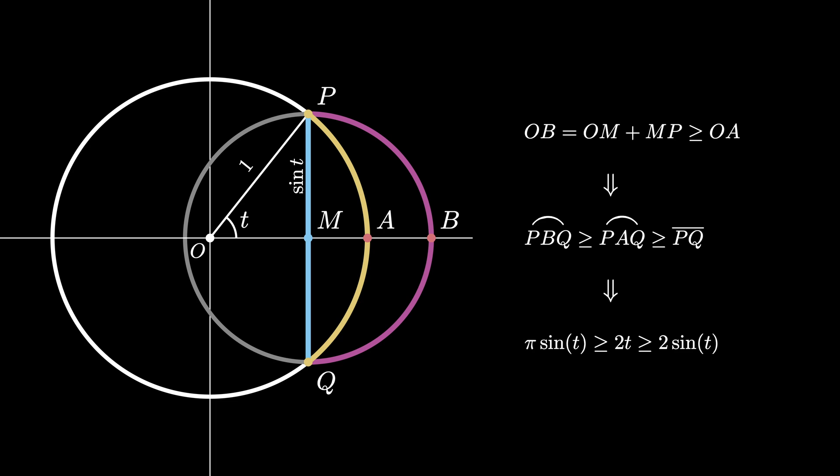From this argument, we see that pi times sine of T is greater than or equal to 2T, which is greater than or equal to 2 times the sine of T. From the latter inequality, we see that 2 times the sine of T is less than or equal to 2T, so that sine of T is less than or equal to T.